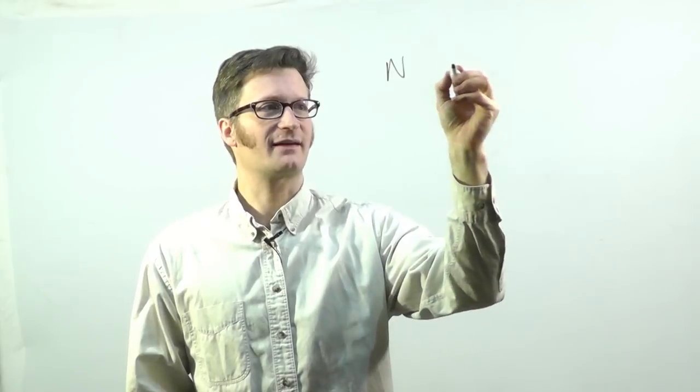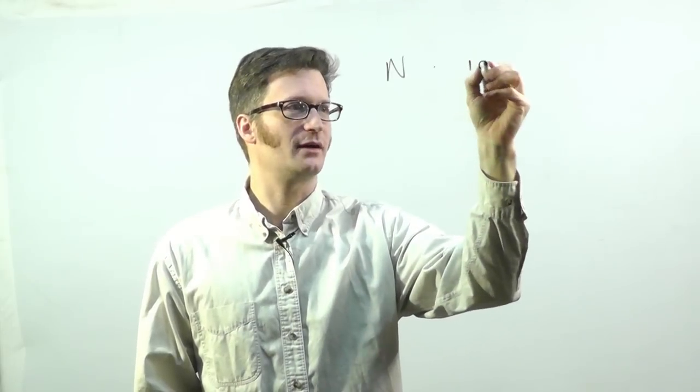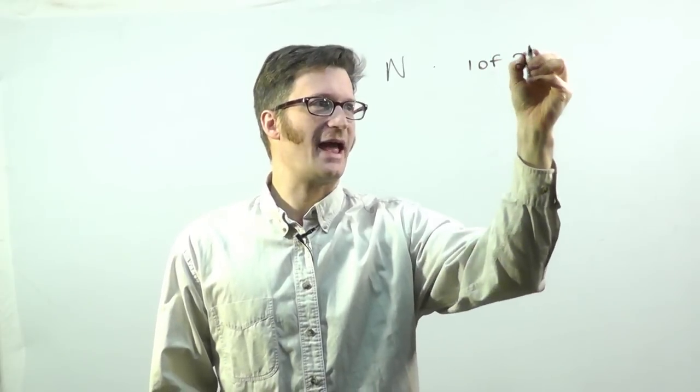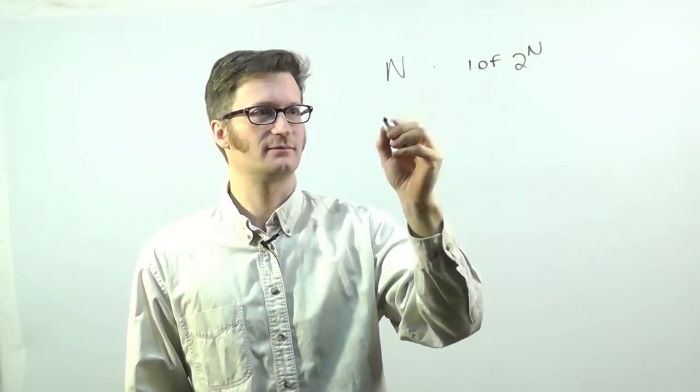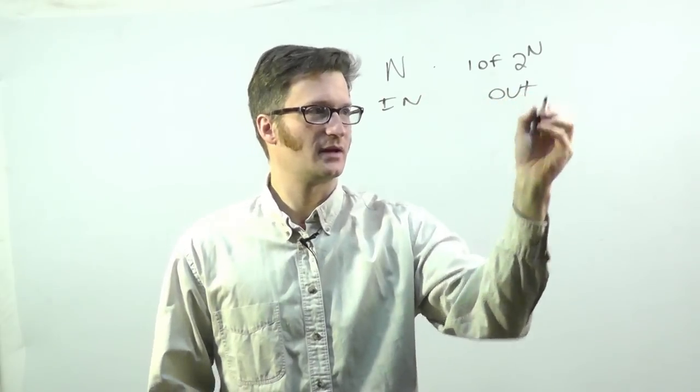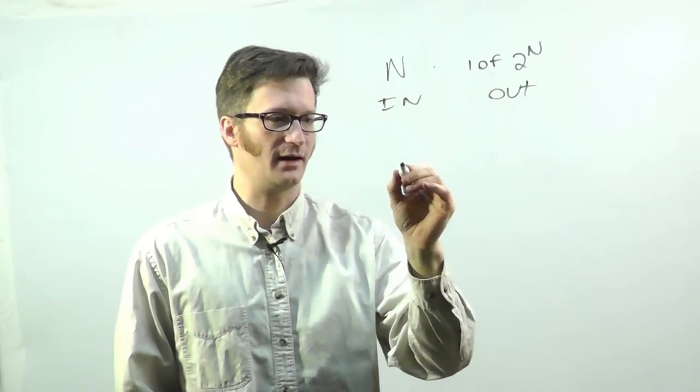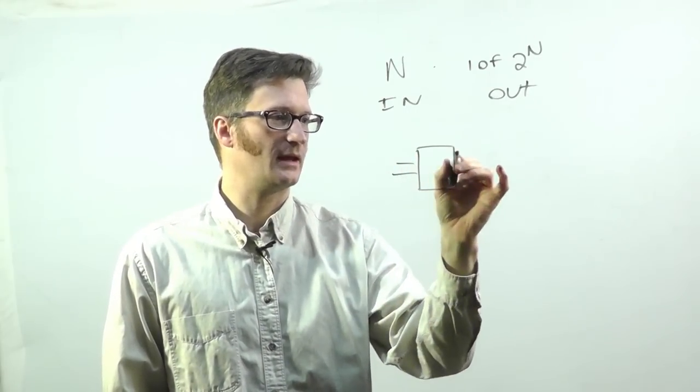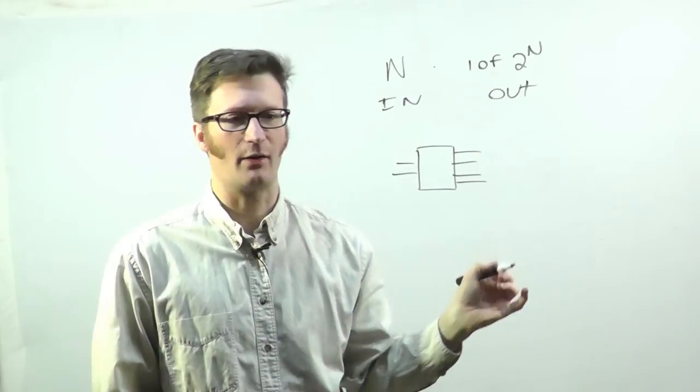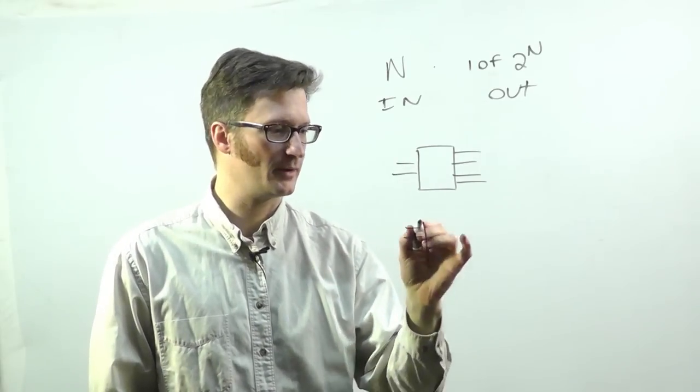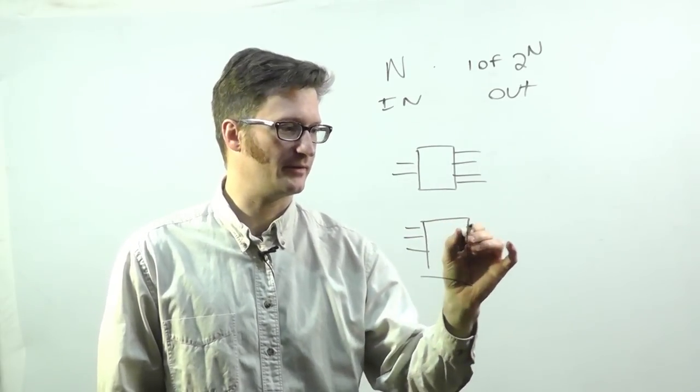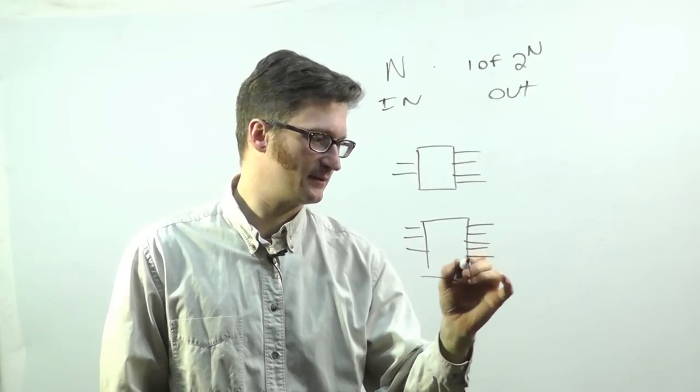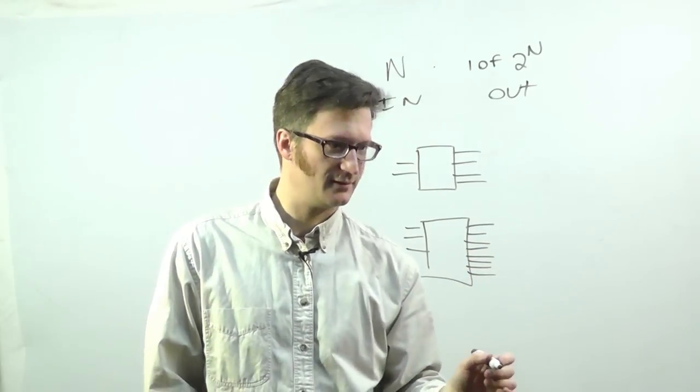Now what is a decoder? A decoder is something that takes n inputs and selects one of two to the n outputs. So you could have a two input decoder, and it would select one of four outputs. Or you could have a three input decoder, and it would select one of eight outputs.